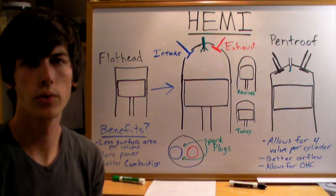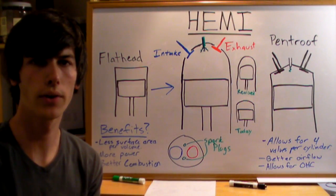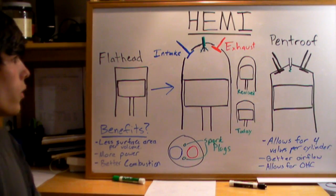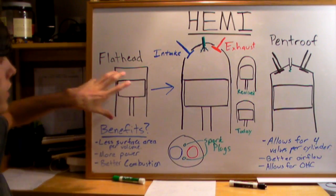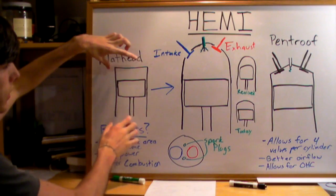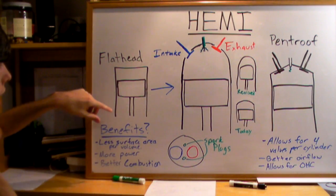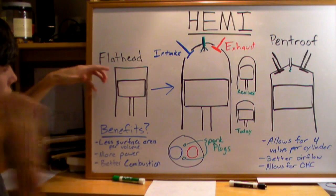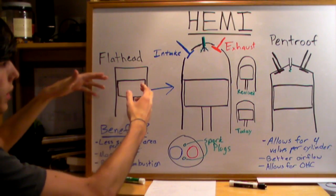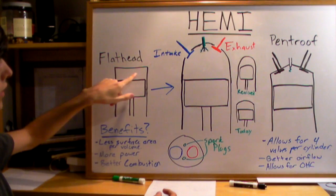I received a request to explain Hemi engines and how they're different from any other engine. In the early 1900s, most engines had a piston cylinder design like this. It was called a flathead design, and the bad thing about it was that there was a small amount of volume and a large surface area within the cylinder head.